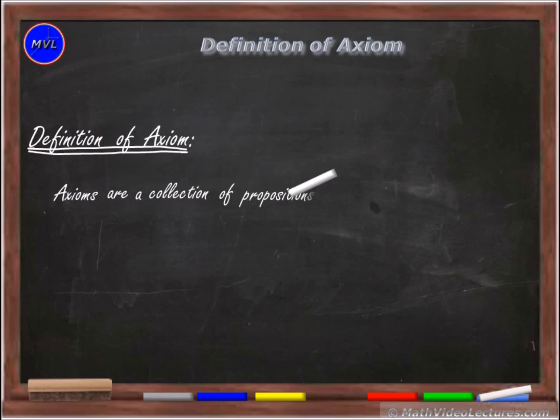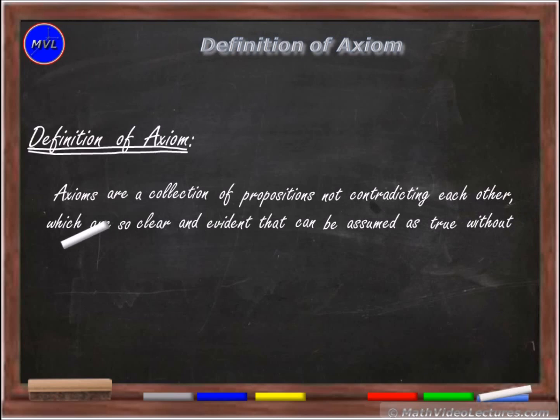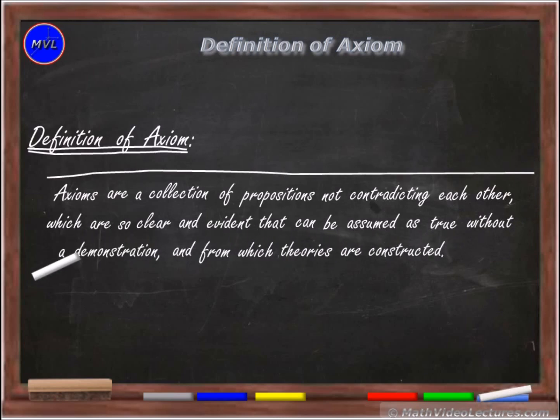Thus axioms can be redefined as a collection of propositions not contradicting each other which are so clear and evident that can be assumed as true without a demonstration and from which theories are constructed. From now on in this site, unless otherwise stated, we'll assume this definition of axiom. It should be clear then that axioms are indeed fundamental or primitive concepts. However, as the set of axioms used as foundation for a science should include only the concepts that are absolutely necessary and not more, then it is clear that while all axioms are fundamental or primitive concepts, not all fundamental or primitive concepts are used as axioms.